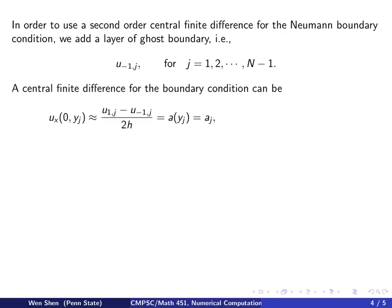Then you can apply a central finite difference for the boundary condition. So u_x, the x derivative at (0, y_j), will be using the u_{1,j} value and minus u_{-1,j}, divided by 2h. And it says this shall equal to a, evaluate at y_j, and let's just call this a_j.